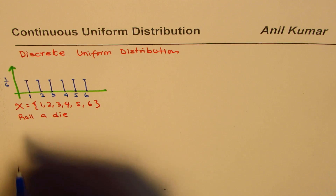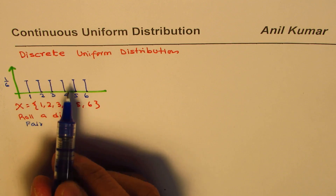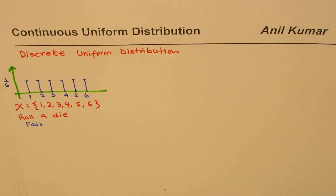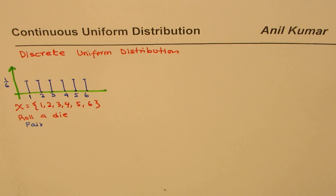We notice here that there is absolutely uniform distribution. Likewise, if you have 10 balls in a bag, the probability of picking any ball will be 1 out of 10. If we put numbers 1 to 10 on the balls, again it will be a uniform distribution. So in continuous random variables, we have continuous uniform distribution as the counterpart.